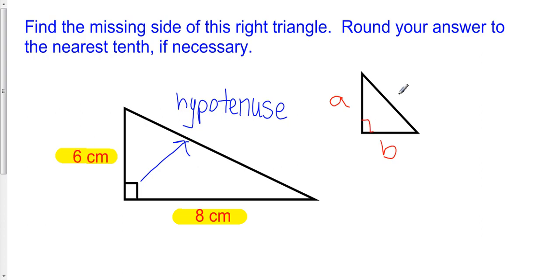and whose hypotenuse is C, so remember the hypotenuse is always the opposite side of the right angle, and there exists a relationship, and that relationship is that A squared plus B squared is equal to C squared. So this is a relationship between the sides of a right triangle.